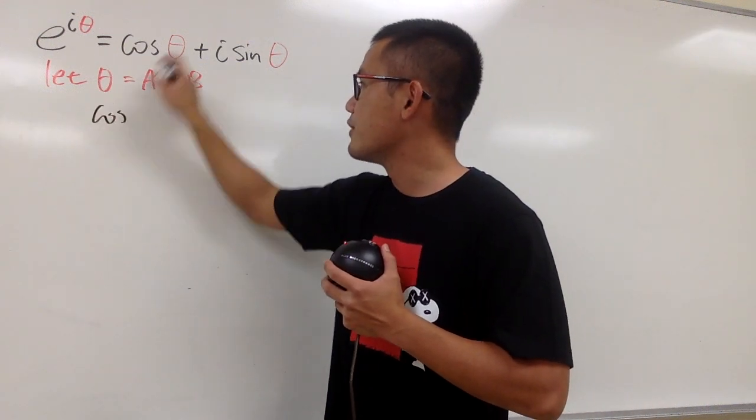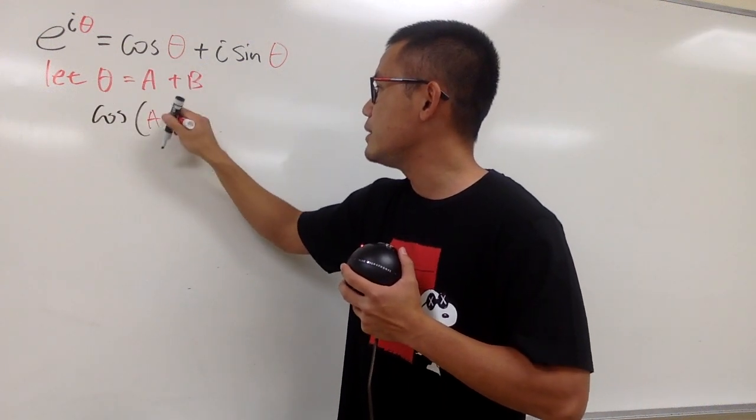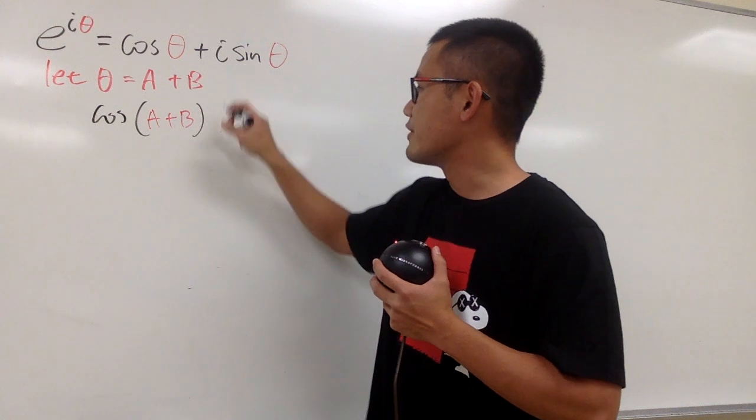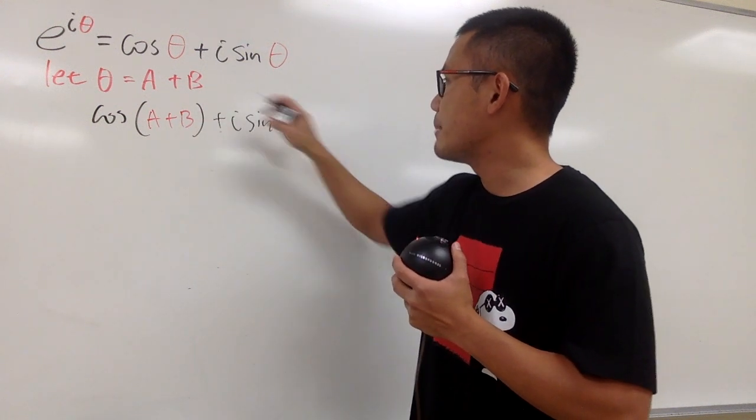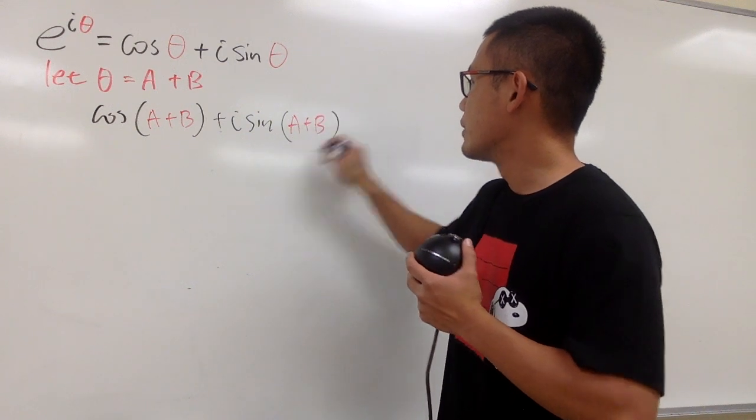So let me write down, cos for this theta, it becomes the a plus b, right? And then, we will have the plus, i is still the i, and then we have the sin, and then this theta becomes the a plus b, okay?